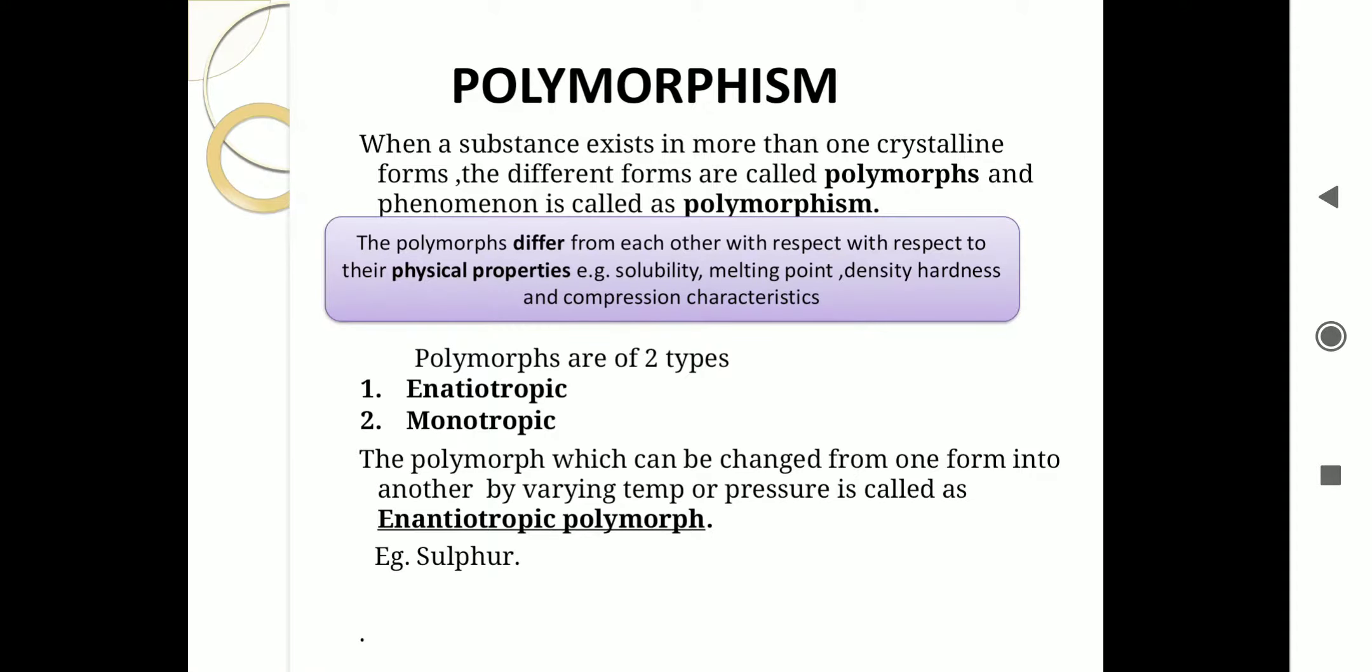Next physical property we will study is polymorphism. When a substance exists in more than one crystalline form, the different forms are called polymorphs, and the phenomenon is called polymorphism. When a solid substance exists in more than one crystalline form, those forms are called polymorphs, and that phenomenon is called polymorphism. Polymorphs differ from each other in physical properties only. They have the same chemical properties, but they differ in physical properties like solubility, melting point, density, hardness, compressibility, etc. So physical properties are different, but chemical properties of polymorphs are the same.